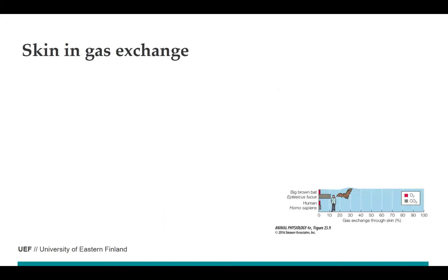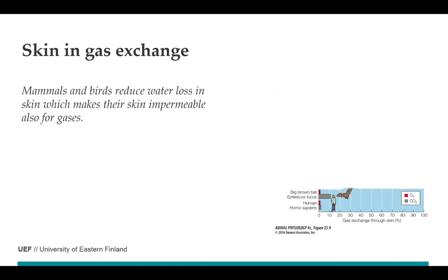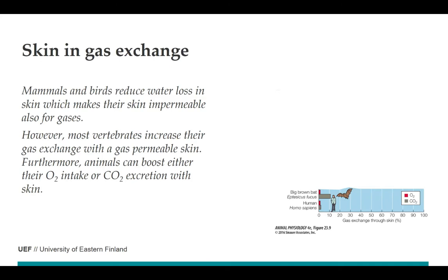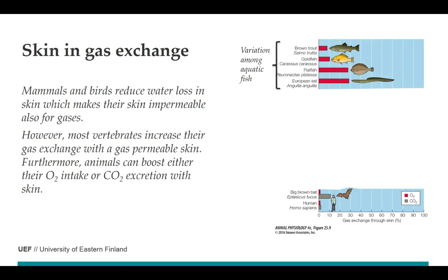Besides gills and lungs, skin is also used for gas exchange. In humans, only a few percent of oxygen or carbon dioxide is transported through the skin, because in mammals and birds the skin is impermeable to reduce water loss. But in most vertebrates, gas-permeable skin increases the gas exchange area and can even be regulated for permeability. In aquatic fish, variation is large: in some species about 10 percent of oxygen comes through the skin, while in others it exceeds 30 percent.